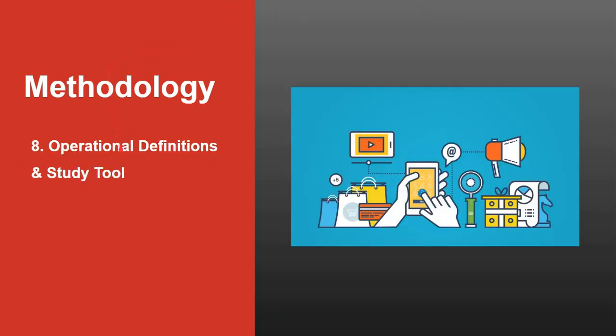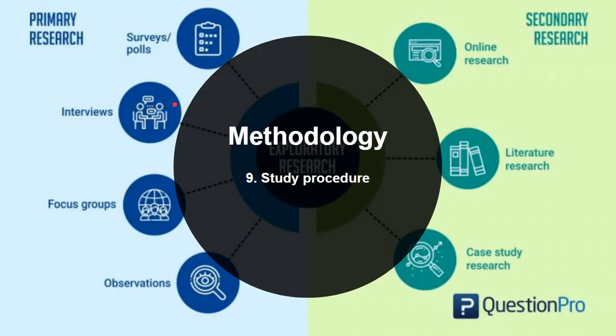Next is operational definitions and study tool. Operational definitions should clearly define not only your disease of study, but also the factors considered under the study. For example, if you are studying diabetes, you should define diabetes and also the factors associated with it like smoking, alcoholism, etc. Based on your study tool, your research will be categorized into primary and secondary research. Primary research includes surveys, polls, interviews, focus group discussions, observations. Secondary research includes online research, literature research and case study research.